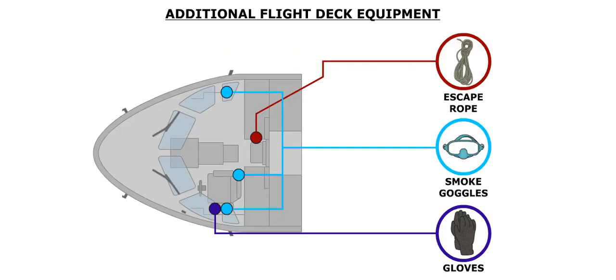An escape rope is located above the electrical rack for use with the flight deck emergency exit. There are also smoke goggles for each crew member. There is a pair of fire-resistant gloves for each pilot.